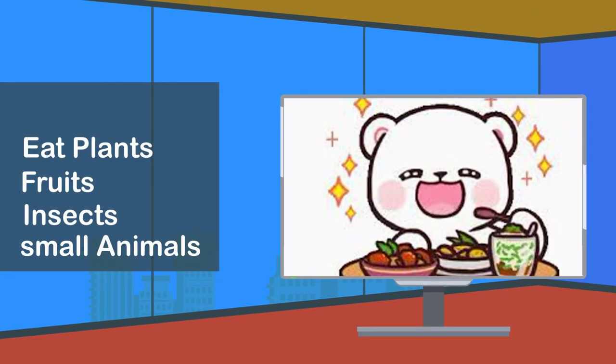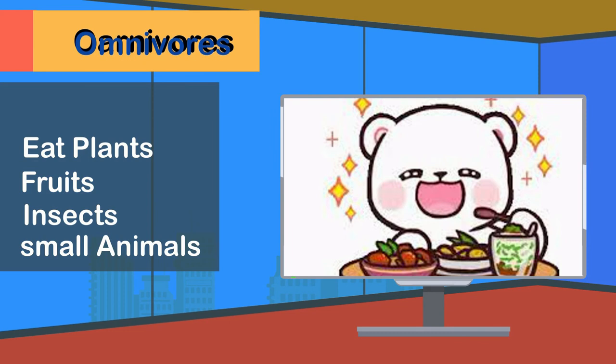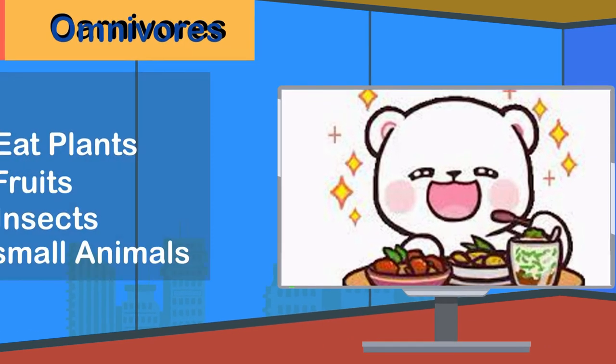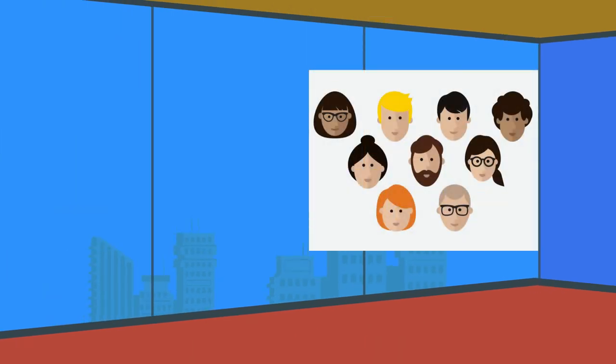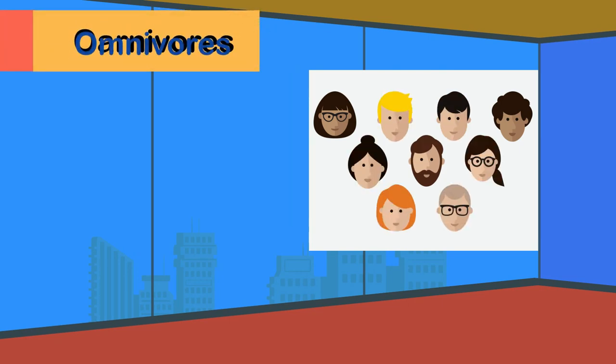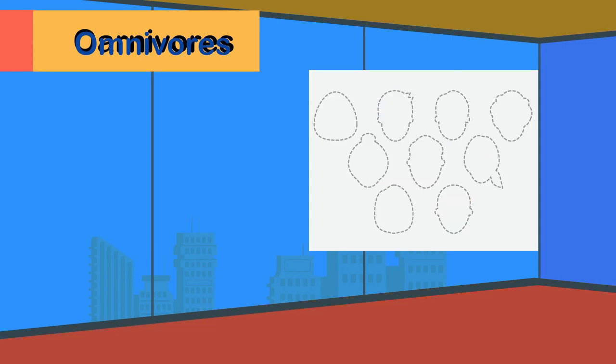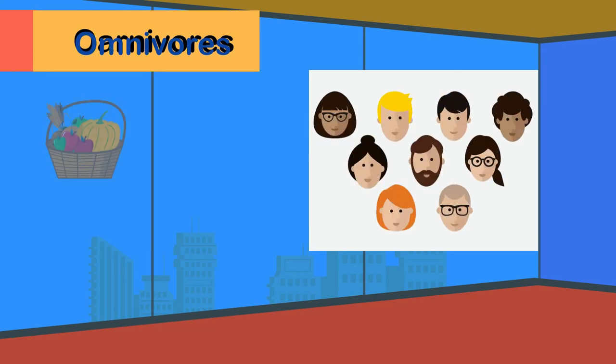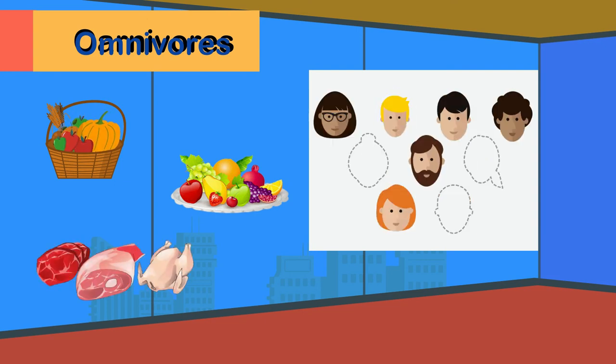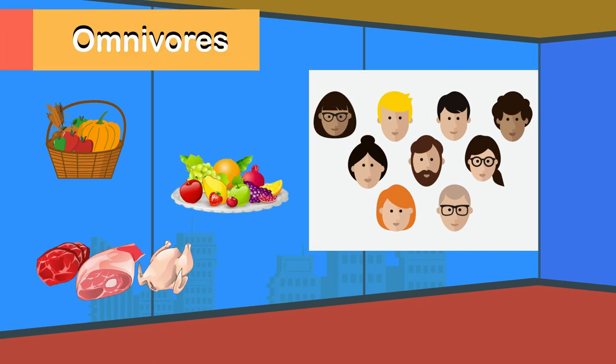Do you know we humans are also omnivores? Because we also eat plants like fruits and vegetables, and eat meat of animals like cows, goats, and chicken.